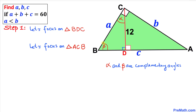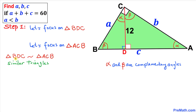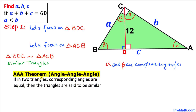Now let's focus on the other triangle ACB. This angle C is 90 degrees. This angle is alpha, and since alpha and beta are complementary, this angle has got to be beta. And since this one is 90 degrees, this angle has got to be alpha. Therefore we conclude that triangle BDC and triangle ACB are similar triangles according to the Angle-Angle-Angle theorem — if in two triangles corresponding angles are equal, the triangles are said to be similar.